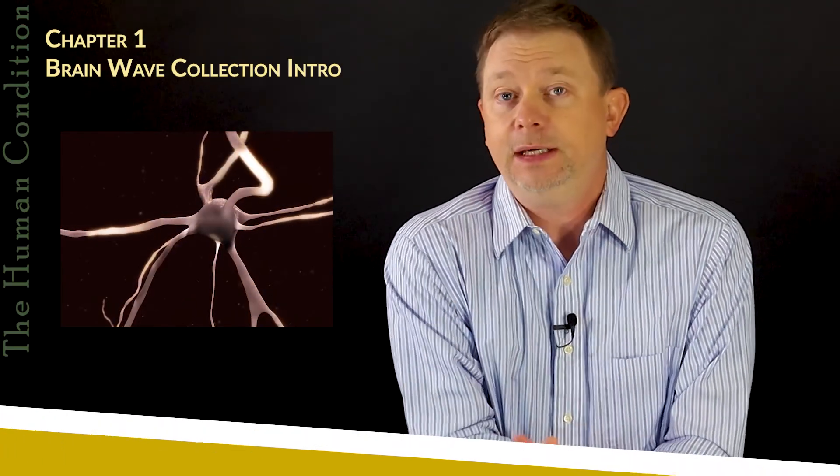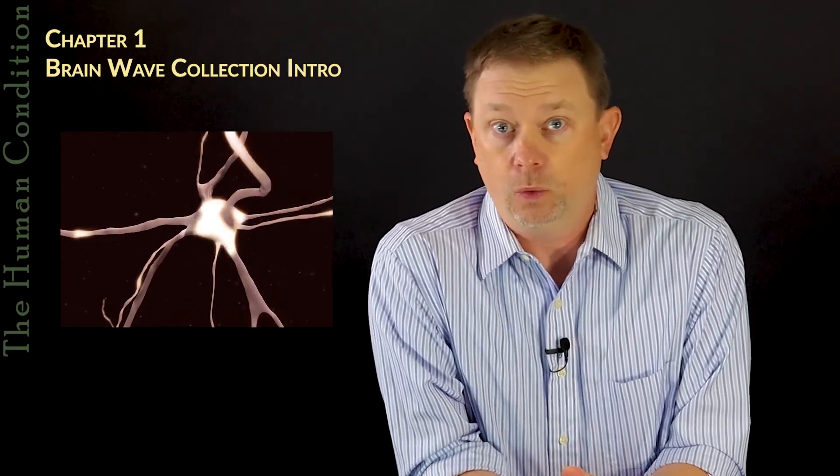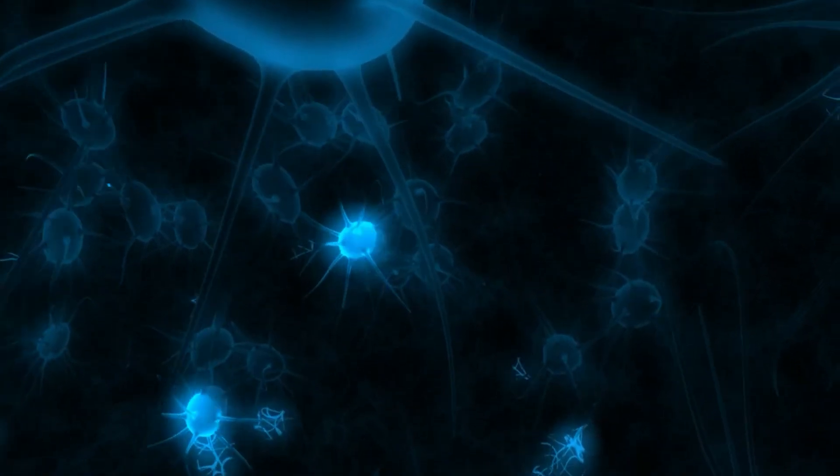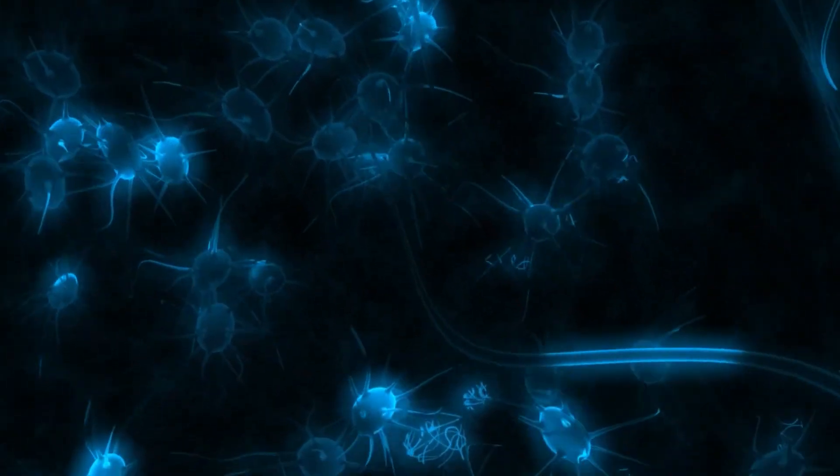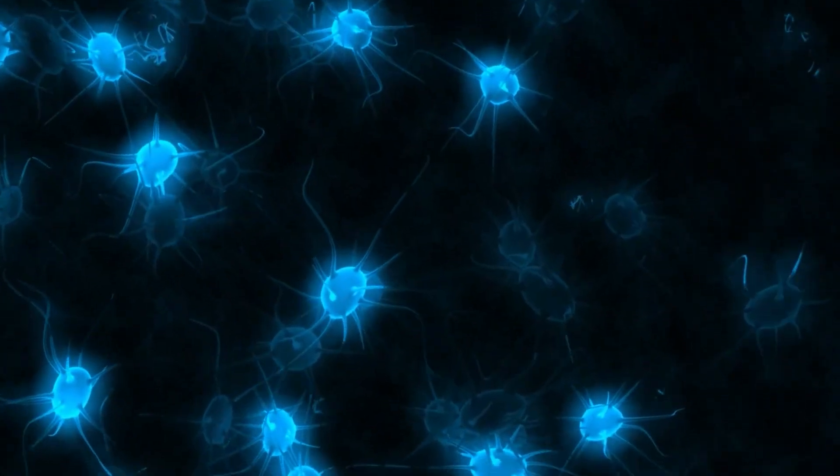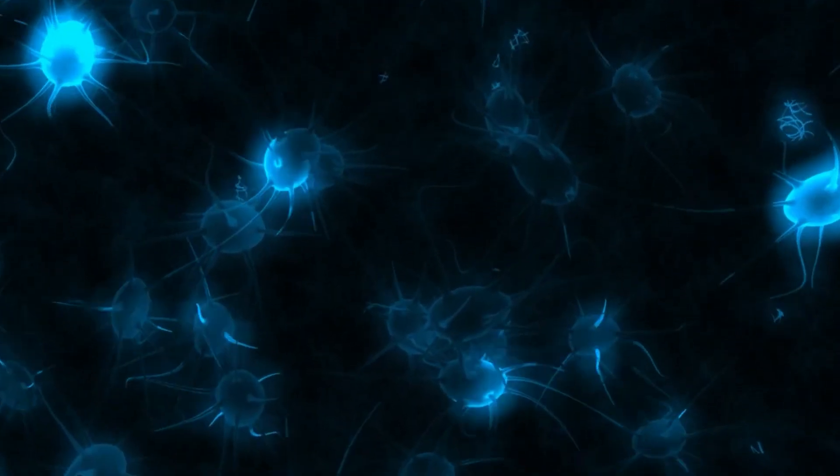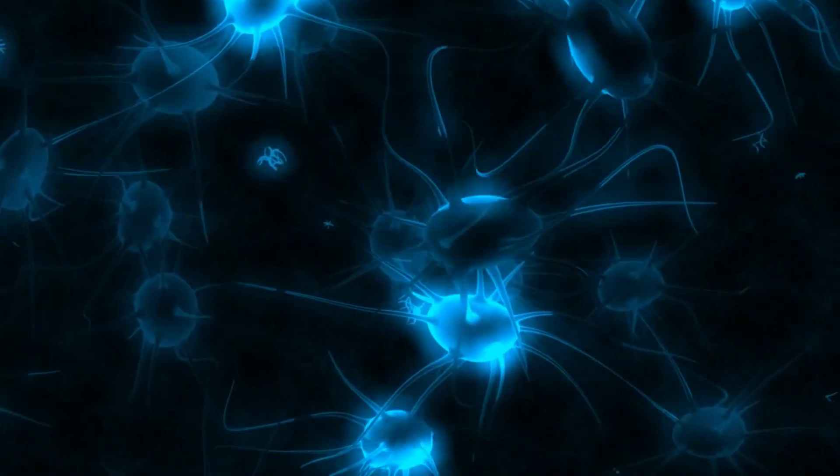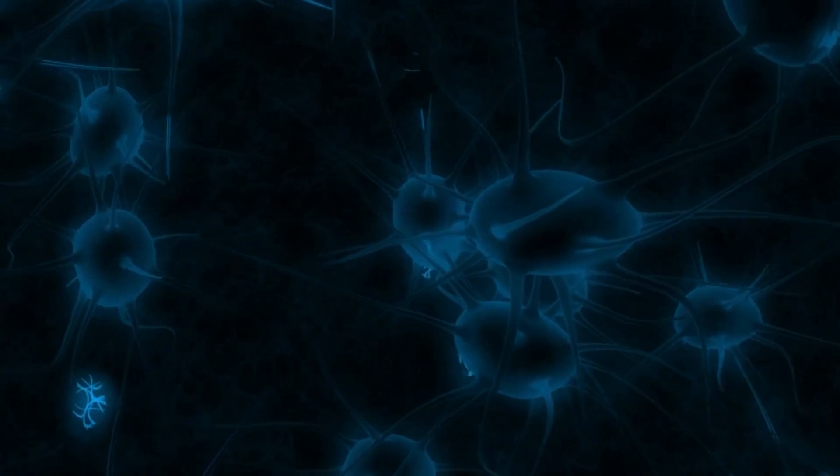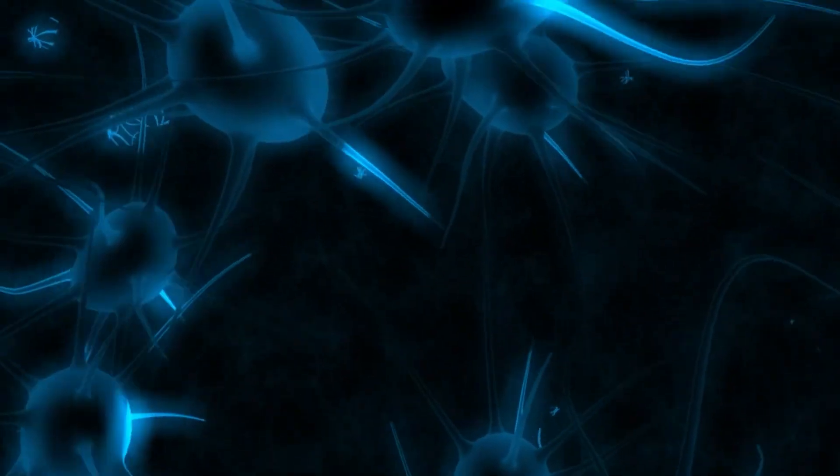However, when we do EEG measurements, we're not measuring one neuron. We're measuring a bunch of neurons and summating all of them together. It's almost as if we're up in a high balcony listening to thousands of neurons, nerve cells, down below in the courtyard, and we hear a thousand voices chanting, trying to figure out what they're saying.